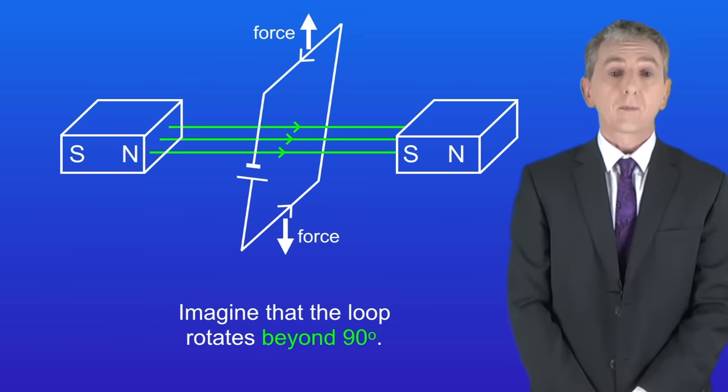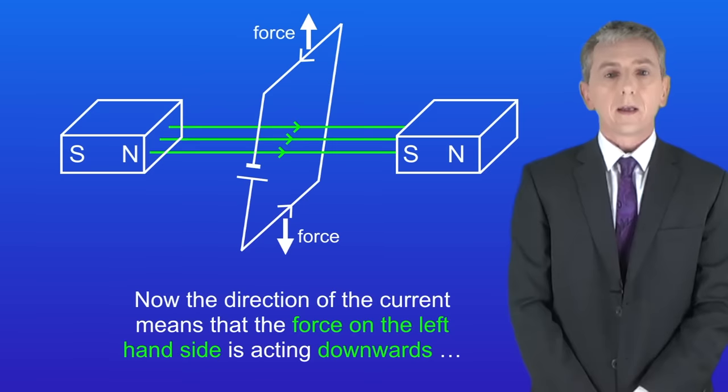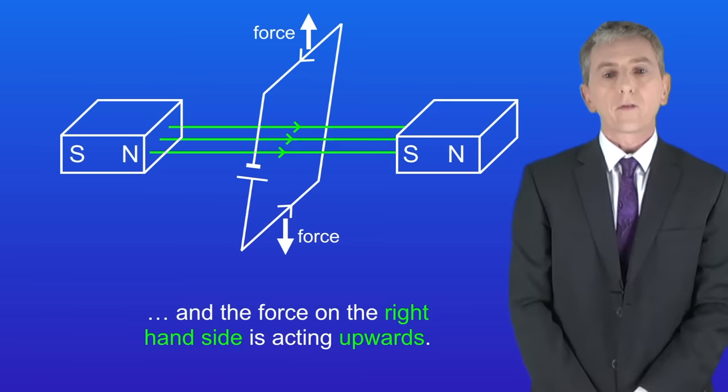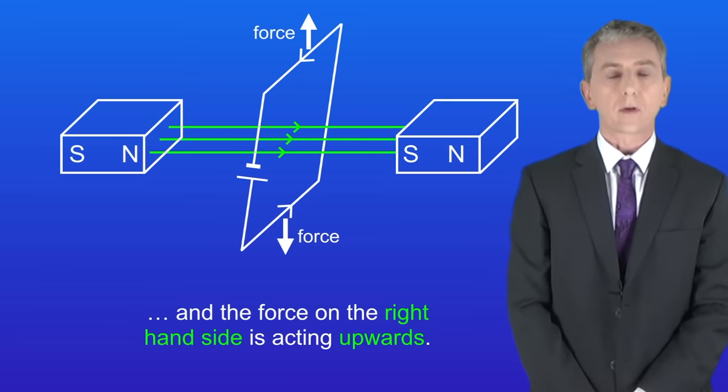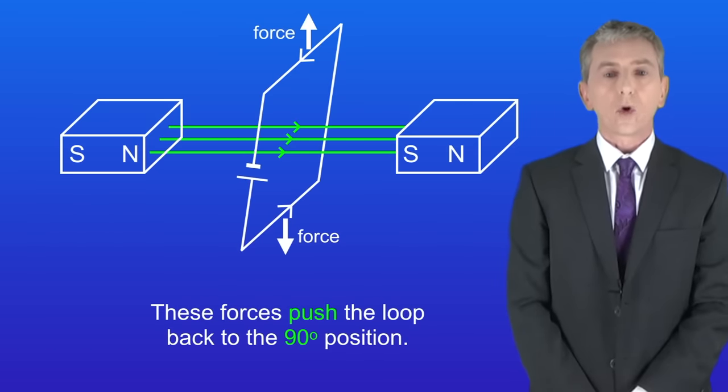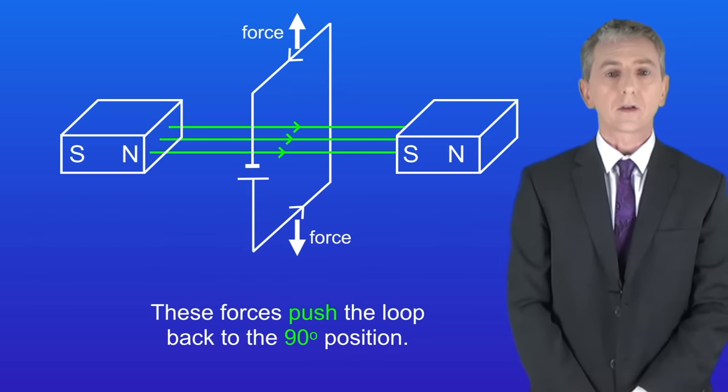Imagine that the loop rotates beyond 90 degrees. Now the direction of the current means that the force on the left hand side is acting downwards, and the force on the right hand side is acting upwards. So these forces push the loop back to the 90 degrees position.